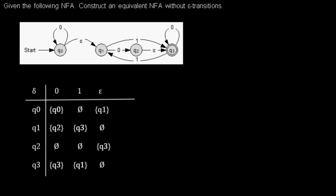Hello, I'd like to show you how to construct an equivalent non-finite automaton without epsilon transitions. This time I'm showing it with a transition table.